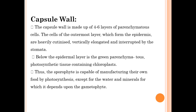The capsule wall is made up of four to six layers of parenchymatous cells. The cells of the outermost layer, which form the epidermis, are heavily cutinized, vertically elongated, and interrupted by stomata. Below the epidermal layer is green parenchyma — photosynthetic tissue containing chloroplasts. Thus, the sporophyte is capable of manufacturing its own food by photosynthesis, except for water and minerals, for which it depends upon the gametophyte.